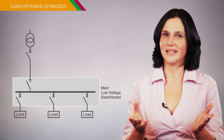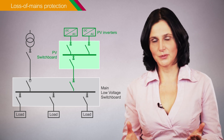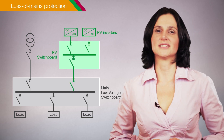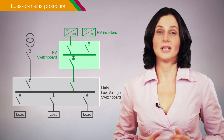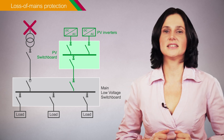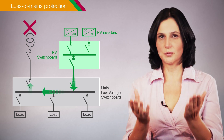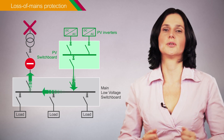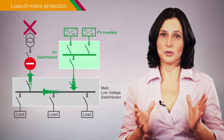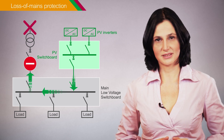Loss of mains protection is required by grid codes and by energy distributors for installations with photovoltaic self-consumption. This protection guarantees that in case of utility supply outage, the installation will not energize the distribution network, which could compromise the safety of utility workers.